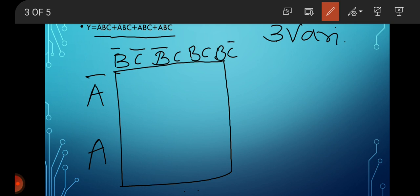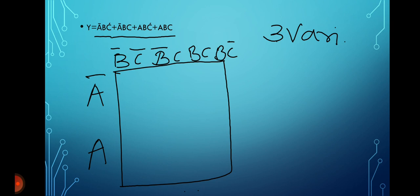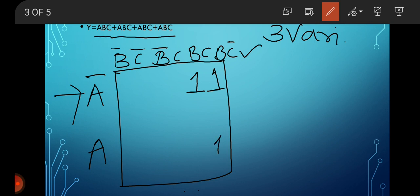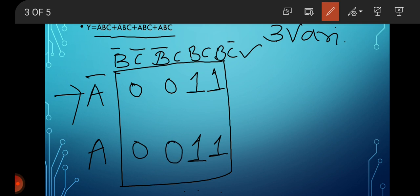See here: A-bar B C-bar is the first term, so put one for A-bar B C-bar. A-bar is here and B C-bar is here, therefore put one here. Then A-bar B C — put one here. Then A B C-bar — put one here. This is one, this is one, this is one. Correct. Then put zero in the remaining places.